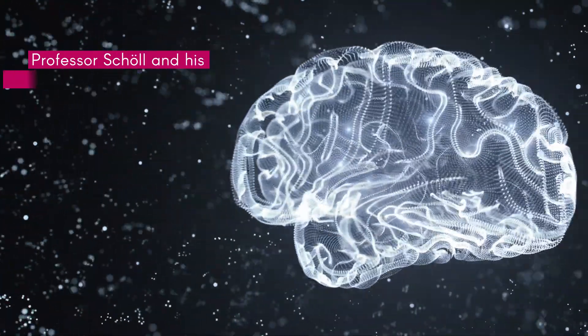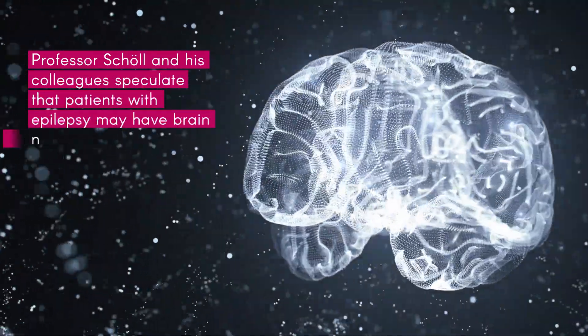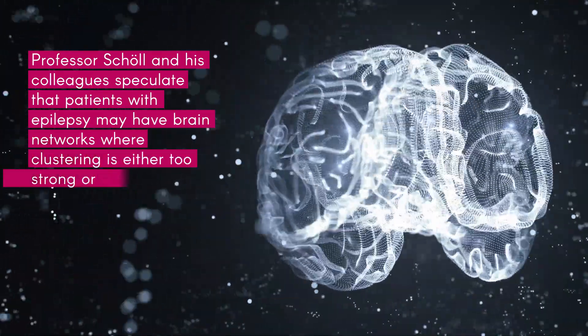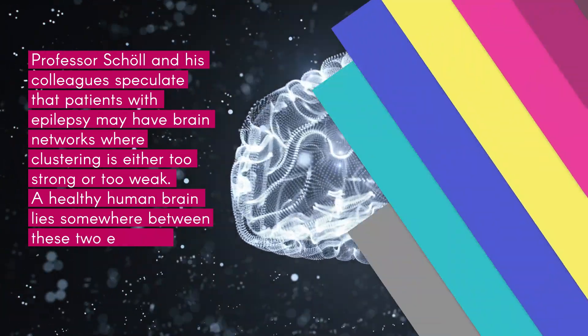Professor Scholl and his colleagues speculate that patients with epilepsy may have brain networks where clustering is either too strong or too weak. A healthy human brain lies somewhere between these two extremes.